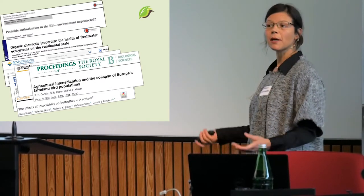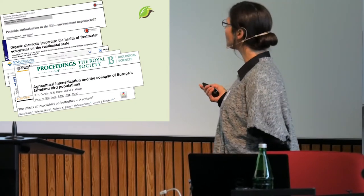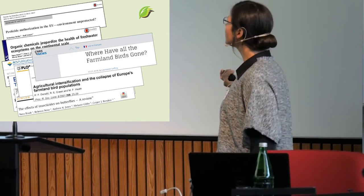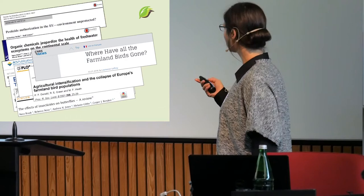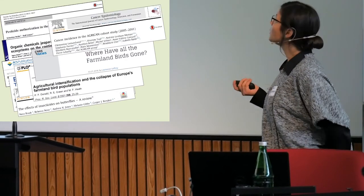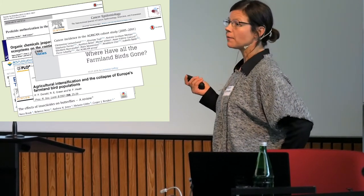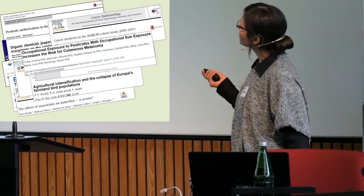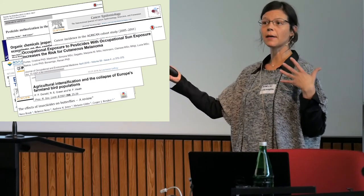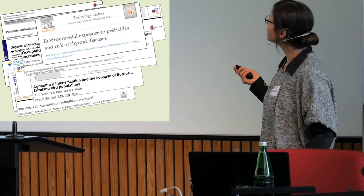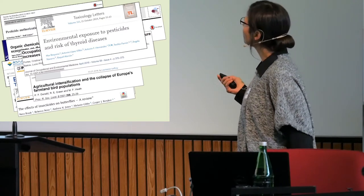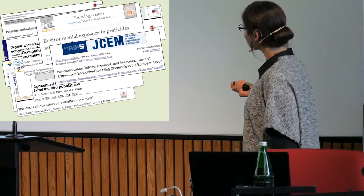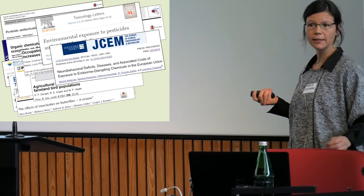If we have no insects, we have no birds, and bird populations are going down in Europe. A French study shows some species of birds have disappeared by up to 60 or 70%. We also see high cancer incidence in farmers — specific cancers like prostate cancer — and cutaneous melanoma, which in combination with sun radiation can show higher toxicity. There are increasing studies on effects on thyroid and neurodevelopmental effects in children exposed to certain pesticides.